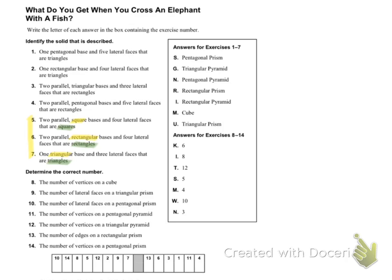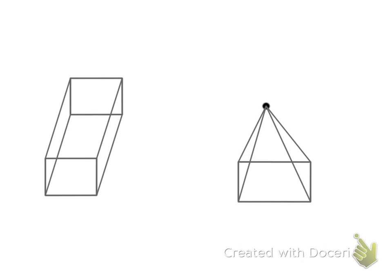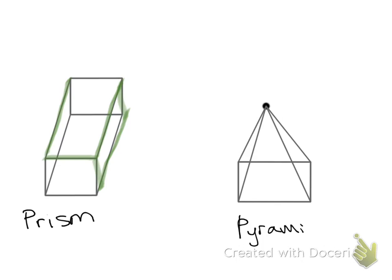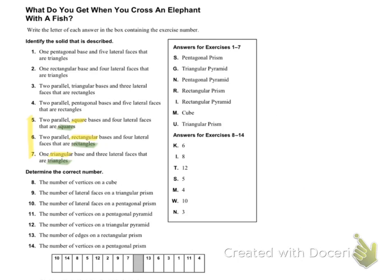Using that information, we can figure out what kind of shape it is. I'm going to go to the next page to show you a couple of different shapes. These are both rectangular shapes — one is a rectangular prism and one is a rectangular pyramid. The lateral faces, I'm going to highlight those in green — the lateral faces are rectangles. So if it says that the lateral faces are triangles, it's a pyramid. If the lateral faces are rectangles, it's a prism.